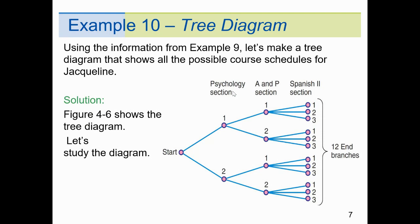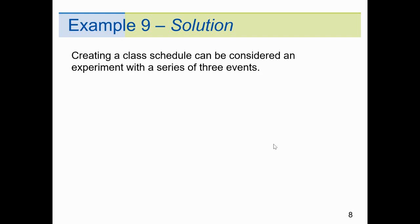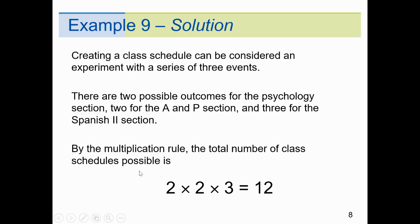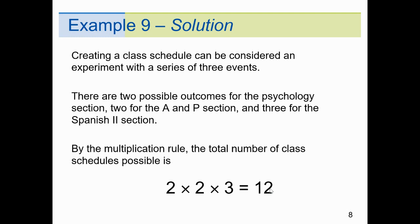Here's Jacqueline at the registrar's office. She's got two sections of psychology to choose from. Say she chooses one. She then has two sections of A&P to choose from, and then three sections of Spanish. Counting the ends of the tree, you get three options per psychology branch, so three plus three plus three plus three equals 12 — or simply two times two times three equals 12 different schedules. By the multiplication rule: two psychology courses, two A&P, three Spanish equals twelve different class schedules. Much easier than constructing a tree diagram, and the answers are identical.